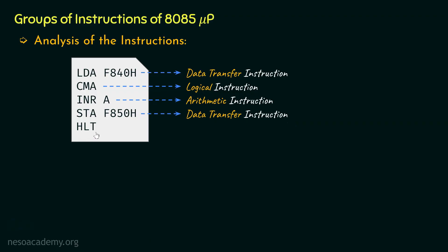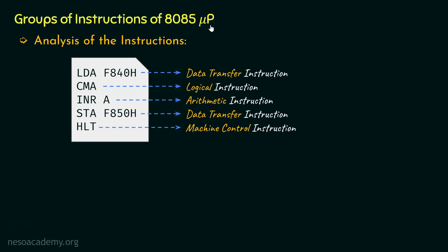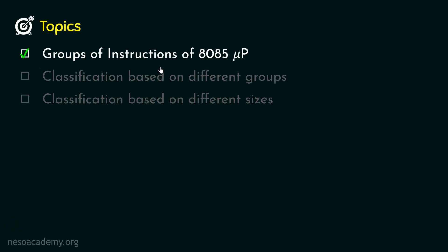Finally we have the HLT instruction. Seeing this instruction, the 8085 microprocessor will halt or stop the execution of the program — it knows this is the end point. This instruction doesn't fall under any of the previous categories; it is a machine control instruction. So when we wrote this program we used different types of instructions, meaning in the 8085 there are different groups of instructions, and before writing programs we need to understand all of them.